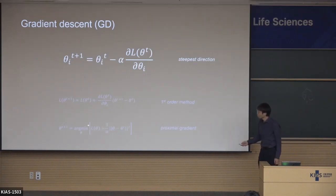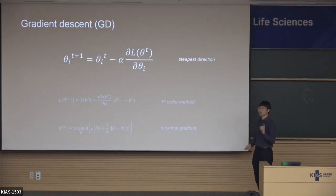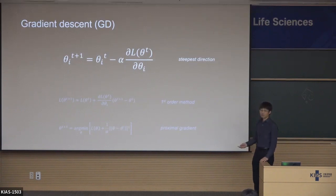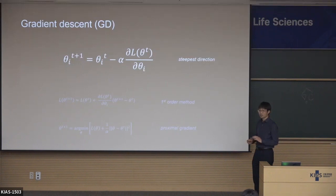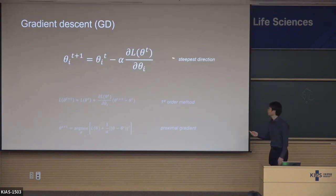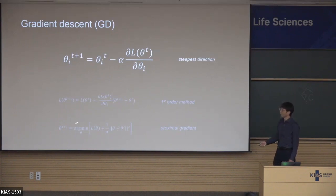You can also interpret this solution as the solution of an optimization: we want to minimize our loss, and at the same time we have a constraint — your next step theta should be close to your current theta. So if you want to stay near theta_t while also decreasing your loss, and you optimize this, then you get the gradient descent update. You can interpret gradient descent in this way.